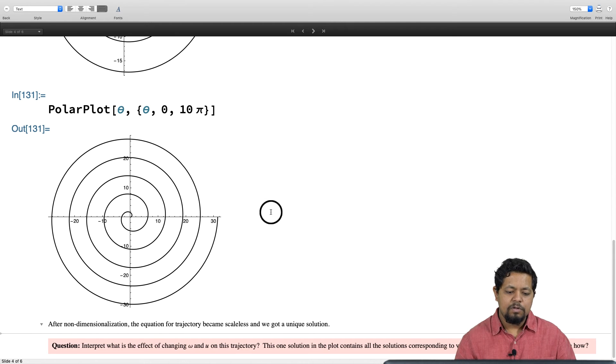As you already know, changing omega and u is not going to change this trajectory. That is, this one solution in the plot contains all the solutions corresponding to various values of u and omega. Can you explain how that is possible?